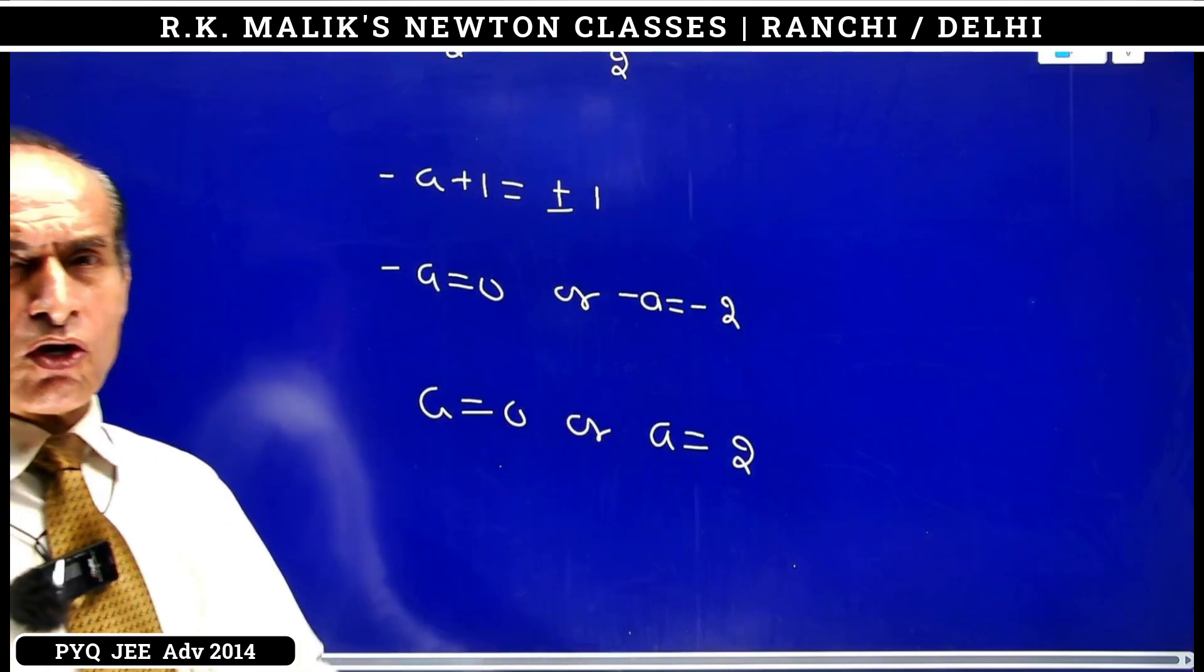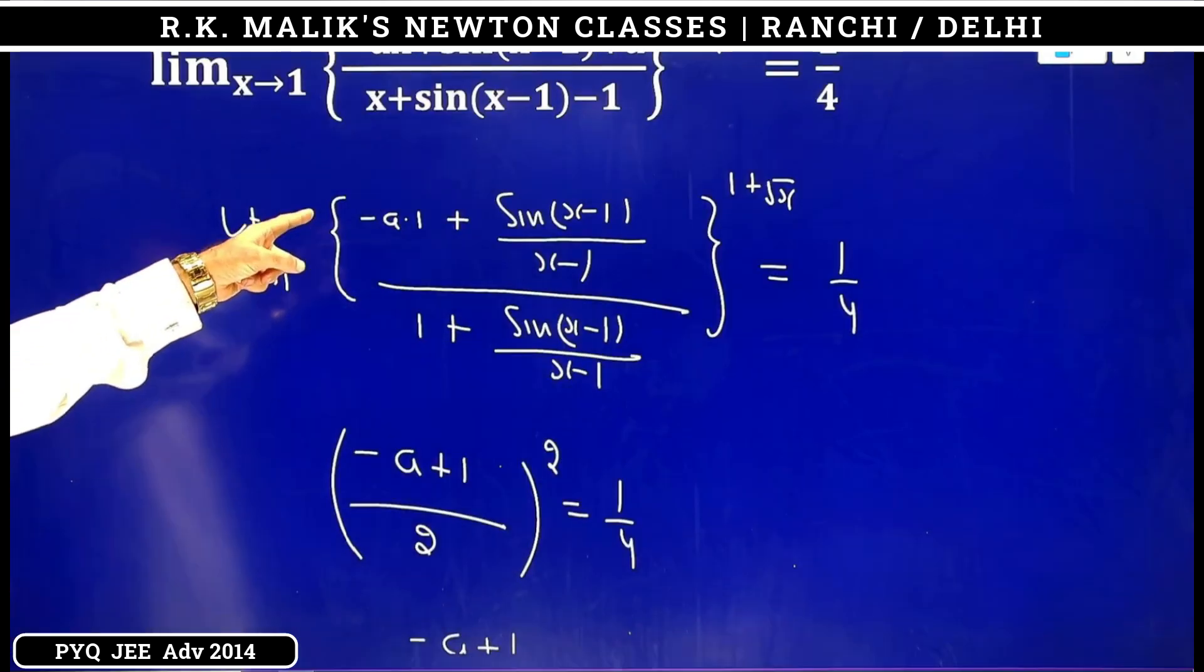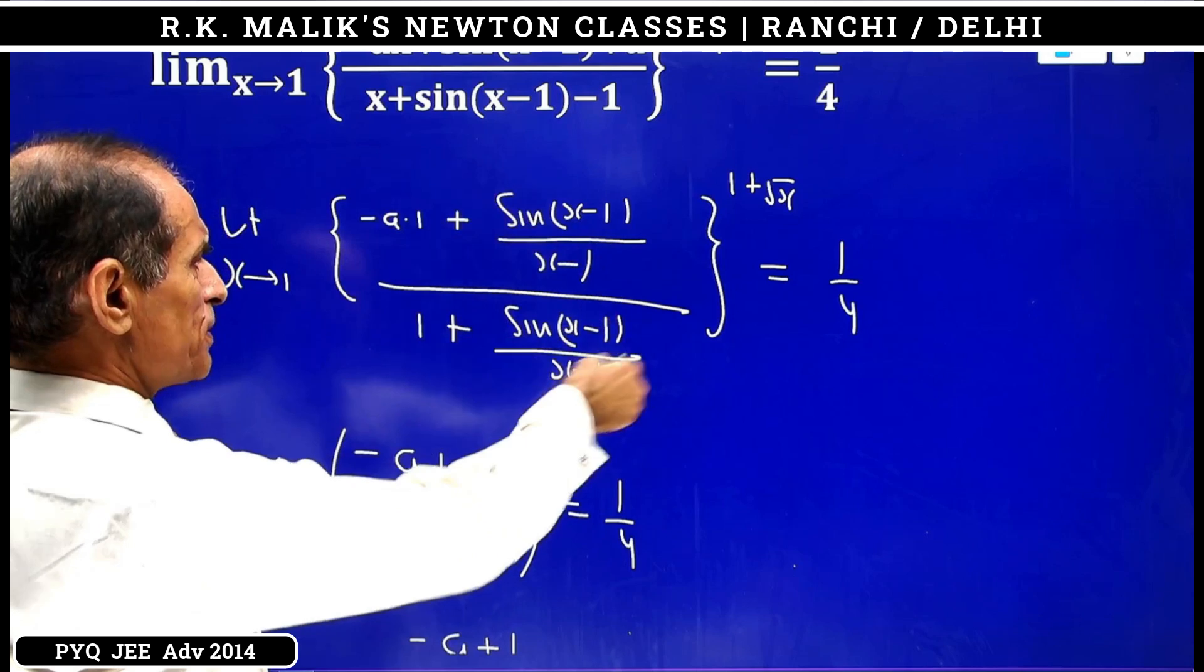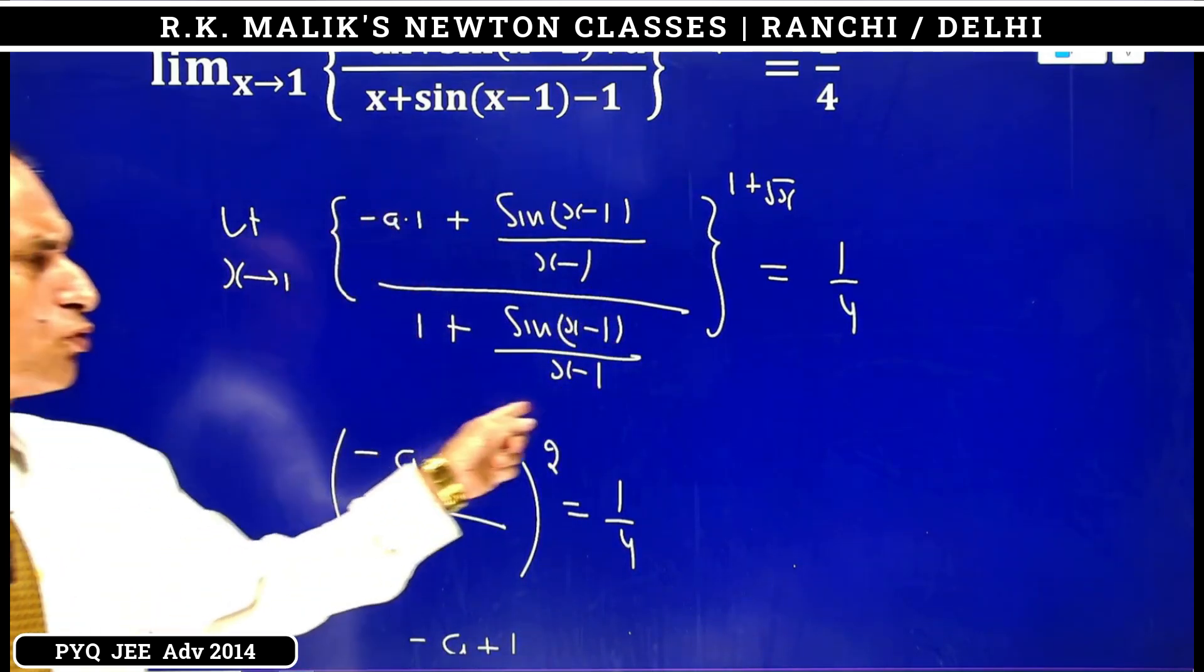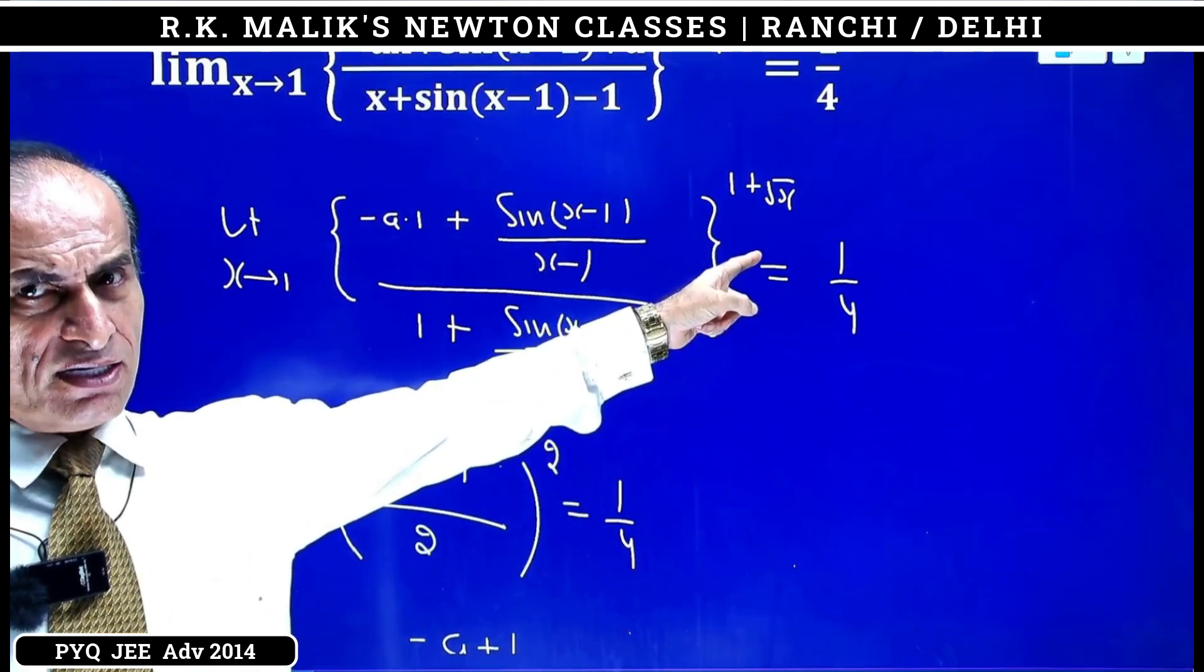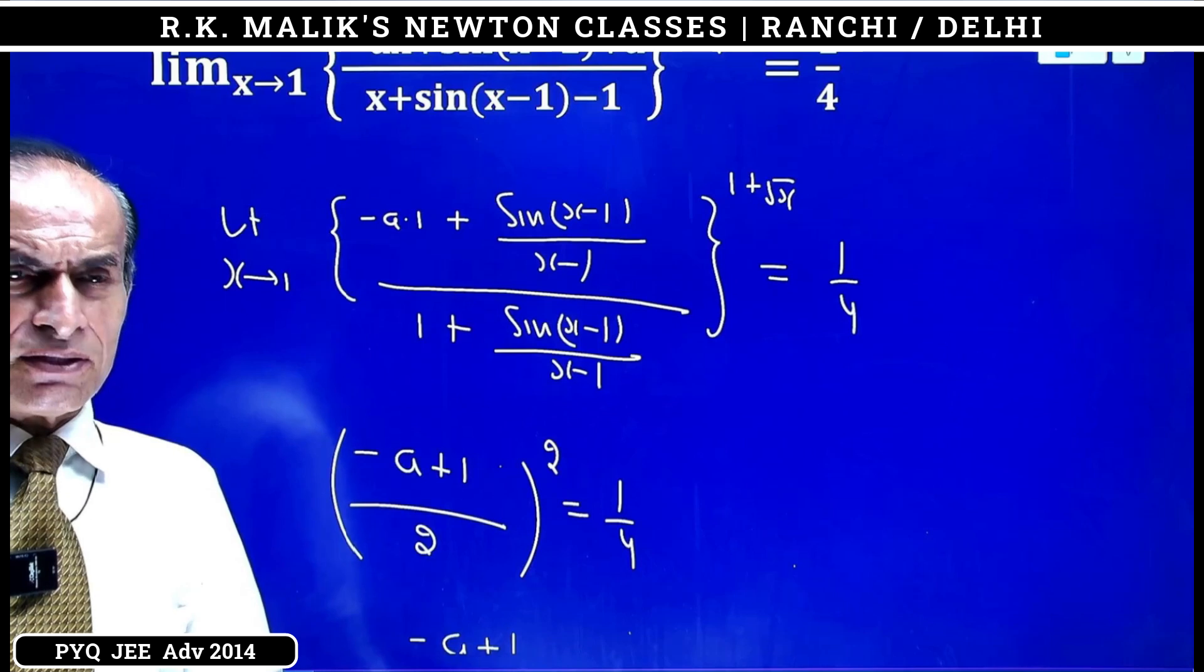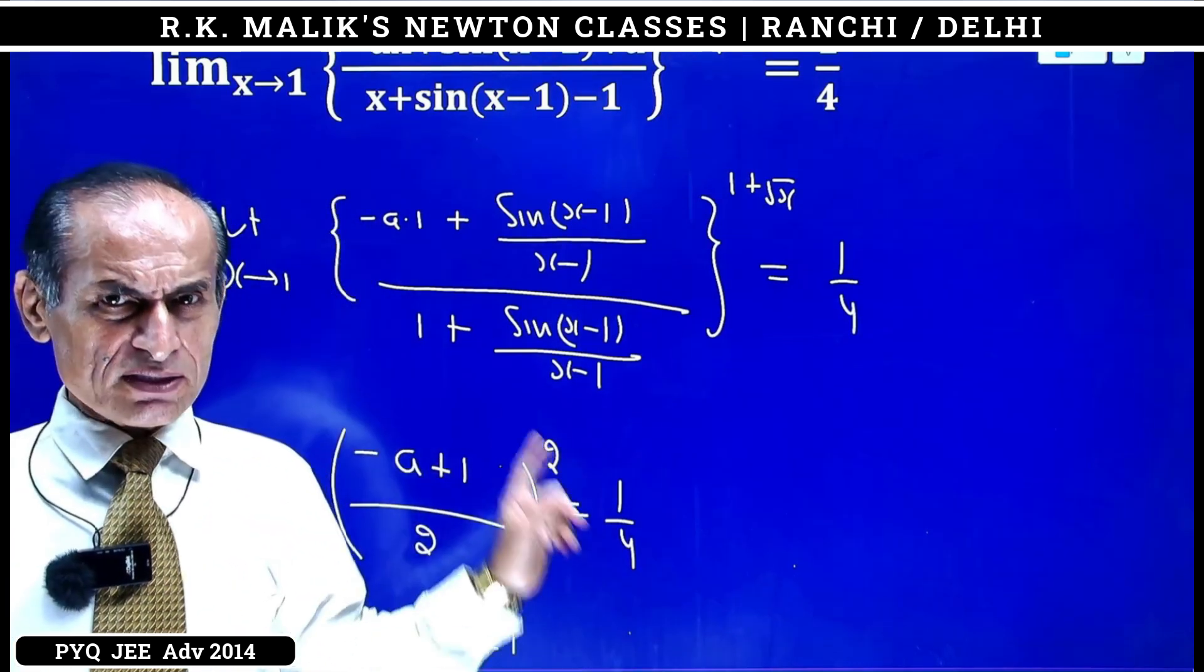But we will have to check the value of a equal to 2. When a equals 2, the numerator will be tending to minus 1, the denominator will be tending to 2, so the whole will be tending to minus 1 by 2. Notice that the base is tending to minus 1 by 2, and the power is tending to 2. Since the base tends to minus 1 by 2, the base will always be very near to minus 2, meaning when x tends to 1, the base will always be negative.